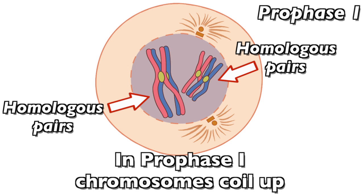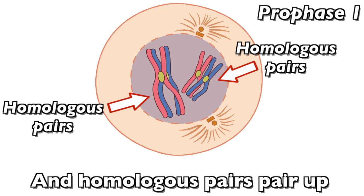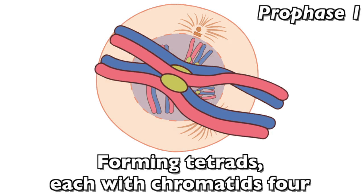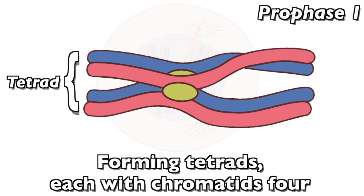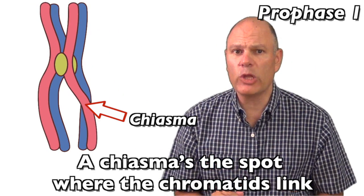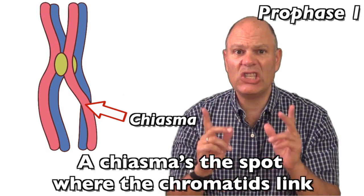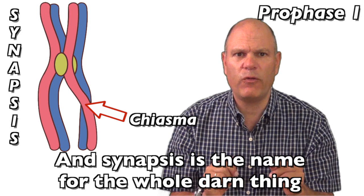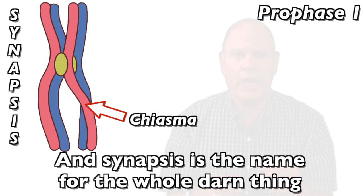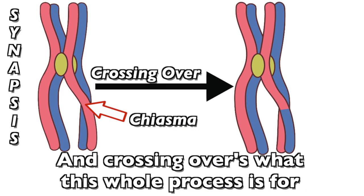In prophase one, chromosomes coil up and homologous pairs pair up, forming tetrads, each with four chromatids. A chiasma is the spot where the chromatids link; synapsis is the name for the whole thing, and crossing over is what this whole process is for.